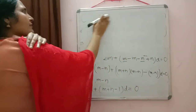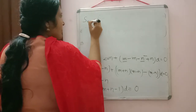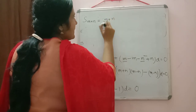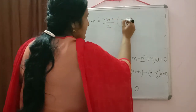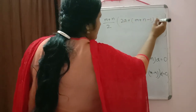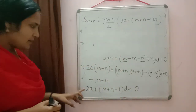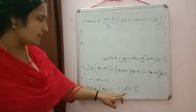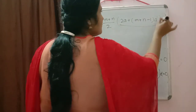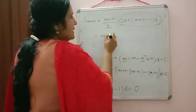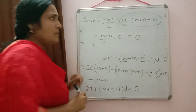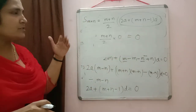We have to find the sum of (m plus n) terms. S(m+n) equals (m plus n)/2 into (2a plus (m plus n minus 1) into d). We found that 2a plus (m plus n minus 1) into d equals 0. So S(m+n) equals (m plus n)/2 times 0, which equals 0. Hence the sum of (m plus n) terms is 0.